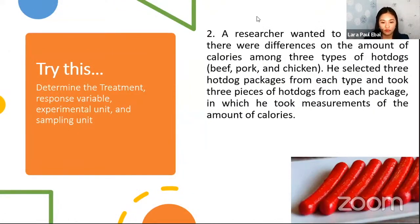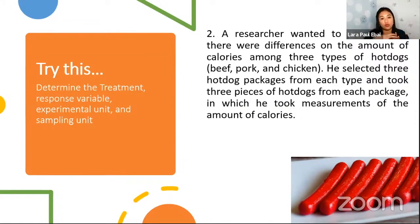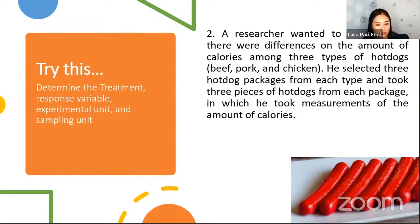Another example: a researcher wanted to determine if there were differences in the amount of calories among three types of hot dogs — beef, pork, and chicken. He selected three hot dog packages from each type and took three pieces of hot dogs from each package, on which he measured the amount of calories. Determine the treatment, response variable, experimental unit, and sampling unit.